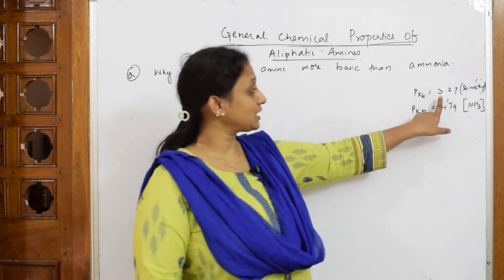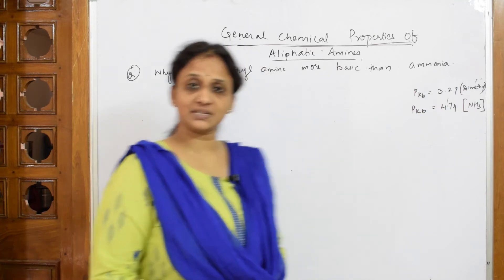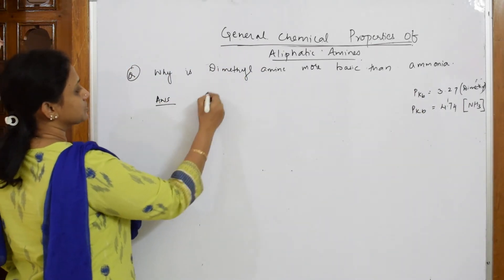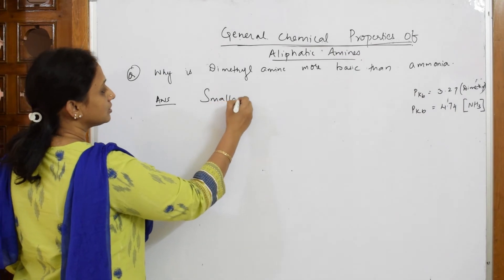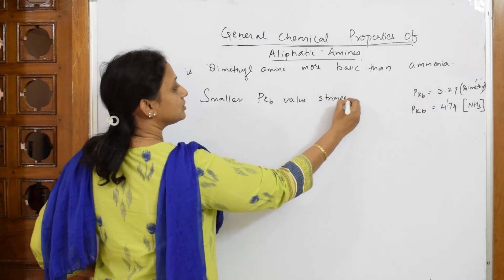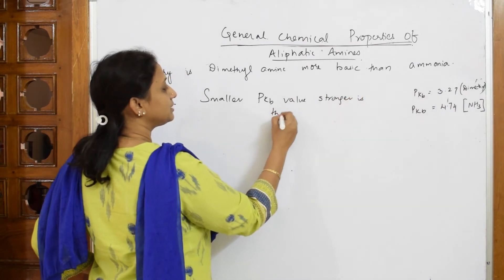Because smaller the PKB value, stronger is the base. So when PKB is given to me, I can write this concept. Smaller PKB value, stronger is the base.